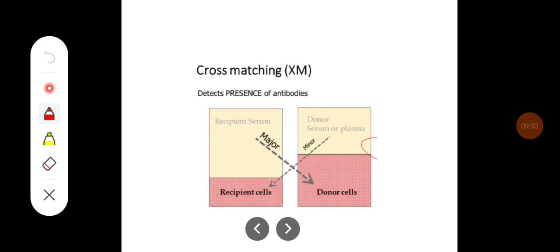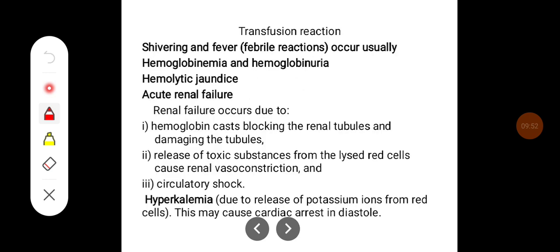In major cross-matching, the donor's RBCs are matched with the recipient's serum, whereas in minor cross-matching the recipient's RBCs are matched with the donor's serum. When transfusion reaction occurs because incompatible blood is transfused, there can be an antigen-antibody reaction leading to hemolysis, anemia, and jaundice.